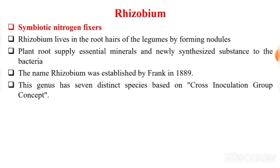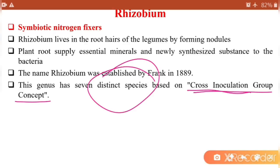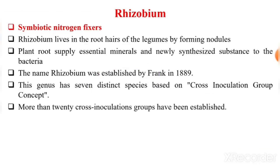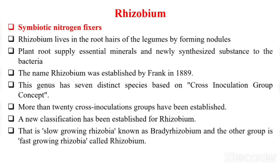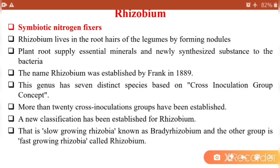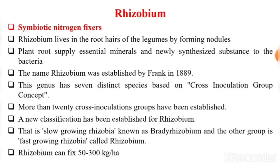The genus has 7 distinct species based on the cross-inoculation group concept. More than 20 cross-inoculation groups have been established. A new classification has been established for Rhizobium: slow-growing Rhizobium known as Bradyrhizobium, and fast-growing Rhizobium simply called Rhizobium. Rhizobium can fix around 50 to 300 kg per hectare.